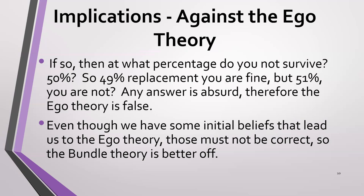Parfit says we can draw implications from these assumptions that speak against the ego theory. If the ego theory were true, you would have to have an answer to this question: at what percentage would you not survive? If you can survive a few percent replacement and you don't survive 98% replacement, do you just have 50% as the middle ground? That means 49% replacement of neurons — you're okay — but 51%, you're not okay. And any answer there seems to be absurd. So Parfit concludes the ego theory is false based on that.